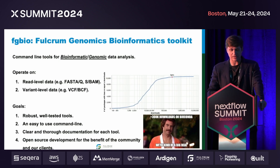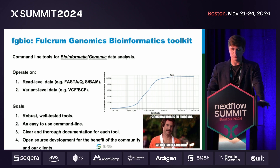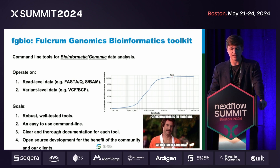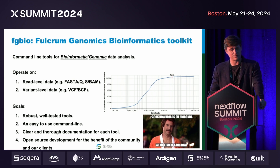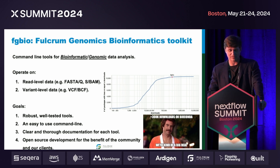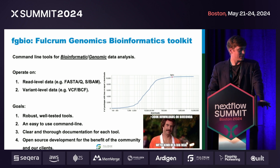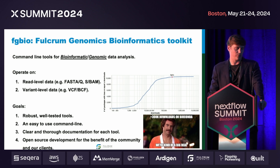So that brings us to FGBIO. Like other popular bioinformatic toolkits such as SAMTools, GATK, or BEDTools, FGBIO is a collection of command line tools for analyzing primary genomic data. Since its conception in 2015, it's been downloaded from BioConda over 300,000 times. It's particularly relevant for the FASTQ Quorum pipeline because it's the tools that allow us to produce these high accuracy consensus reads.